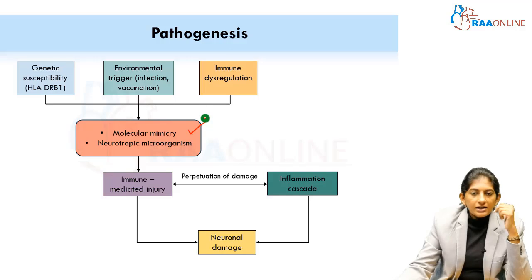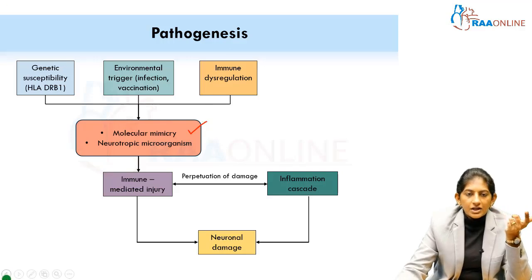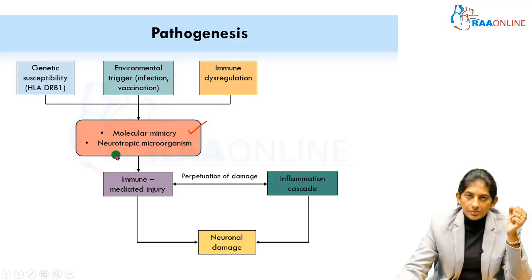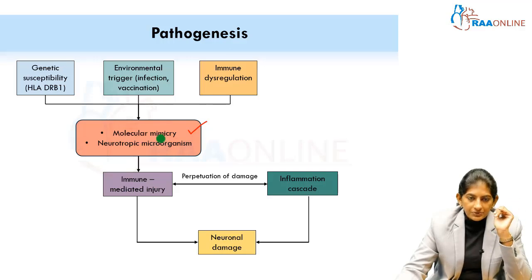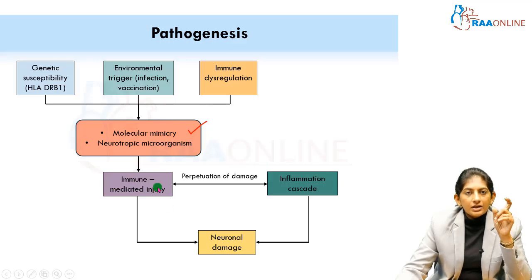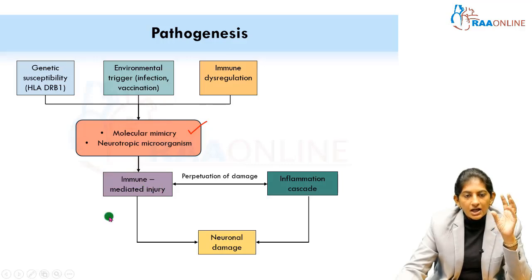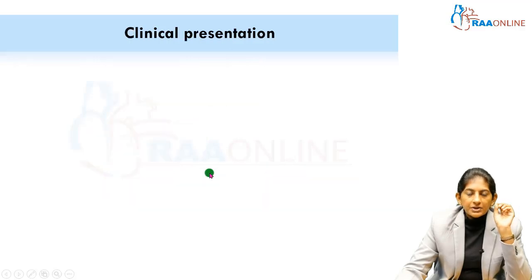You must write the term molecular mimicry in the exam — that is very important. It can be molecular mimicry, which is most often cited, or it can be direct neurotropic organism involvement as well. Both of these can be pathogenic for the onset of ADEM. Ultimately, there is an immune-mediated injury that happens in the various components of the myelin sheath, starting an inflammation cascade, finally leading to neuronal damage. I will show a picture of how the MOG antibodies form and how they attack and cause neuronal injury.